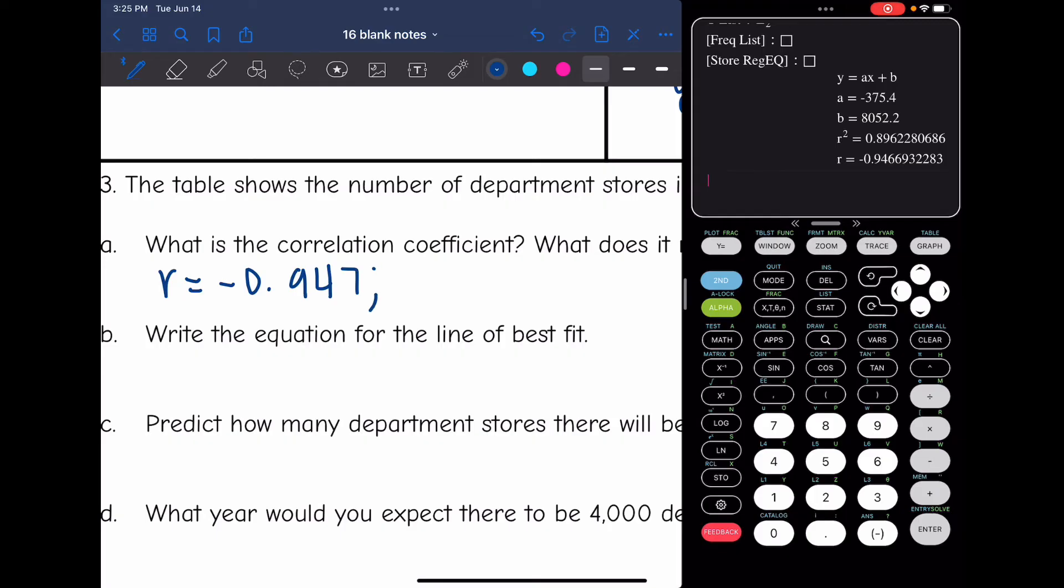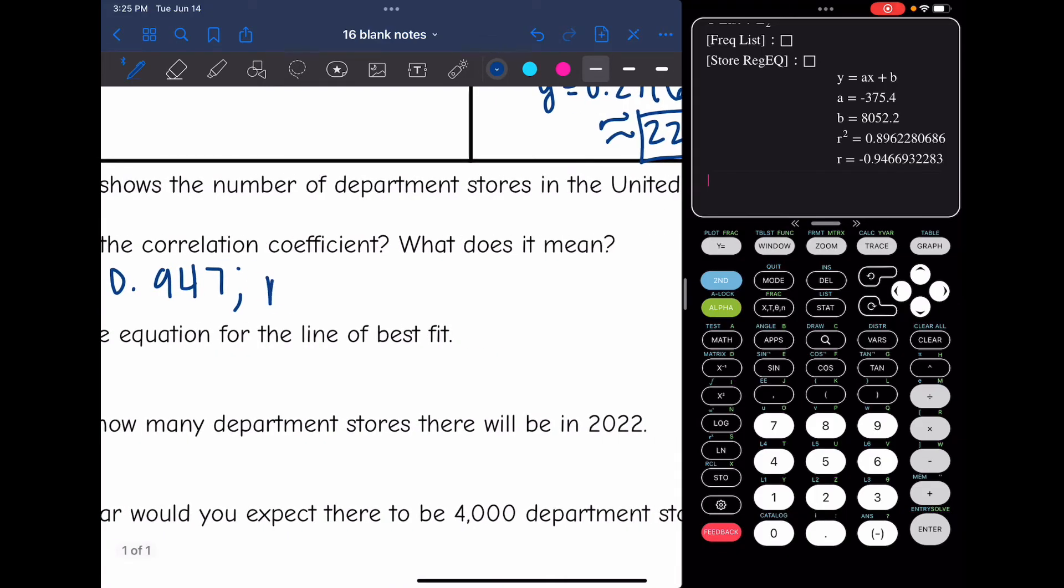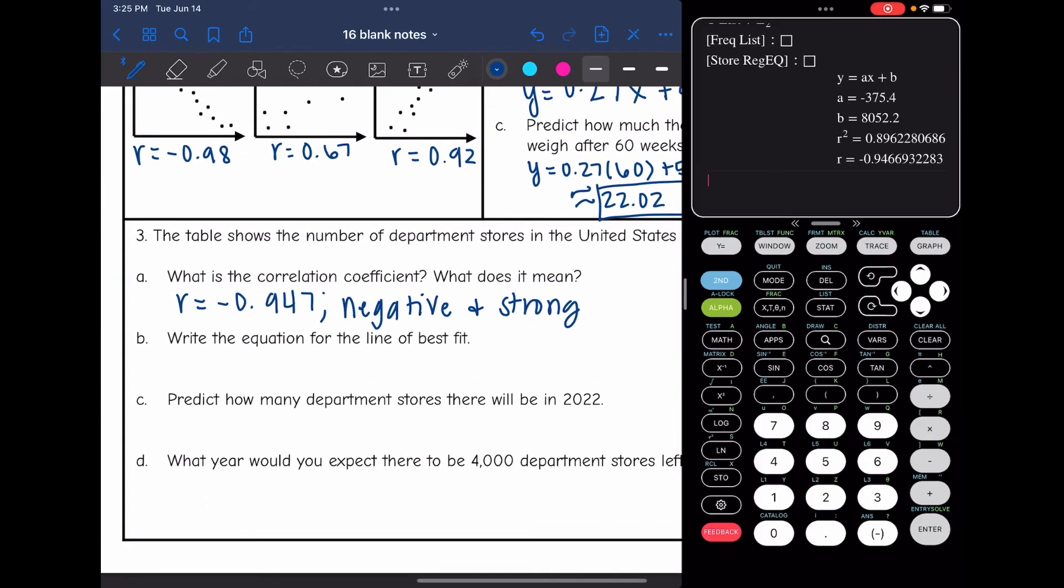And that means that this correlation is negative and it is strong. And then it asks for the equation of the line of best fit. So that would be y equals negative 375.4x plus 8,052.2.